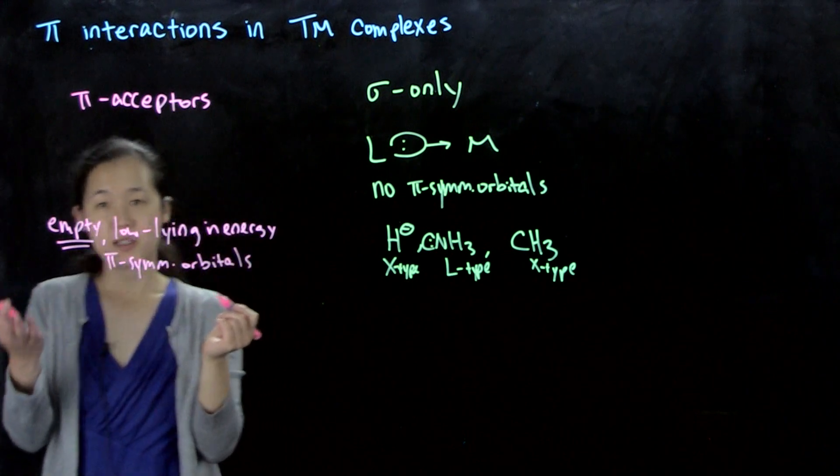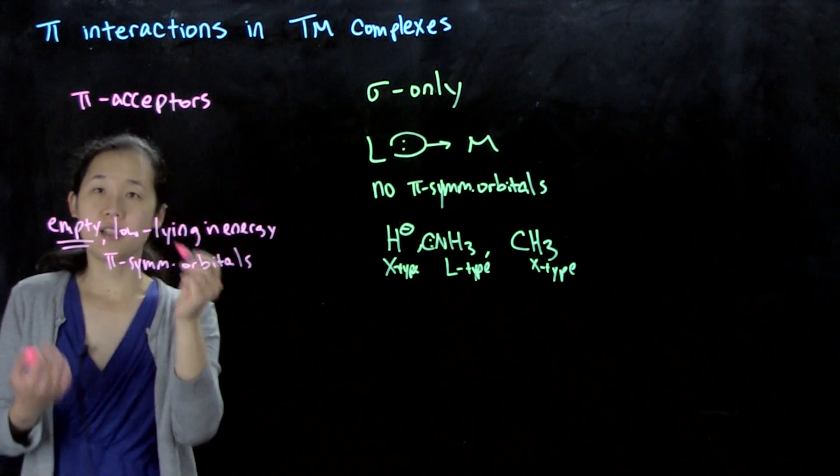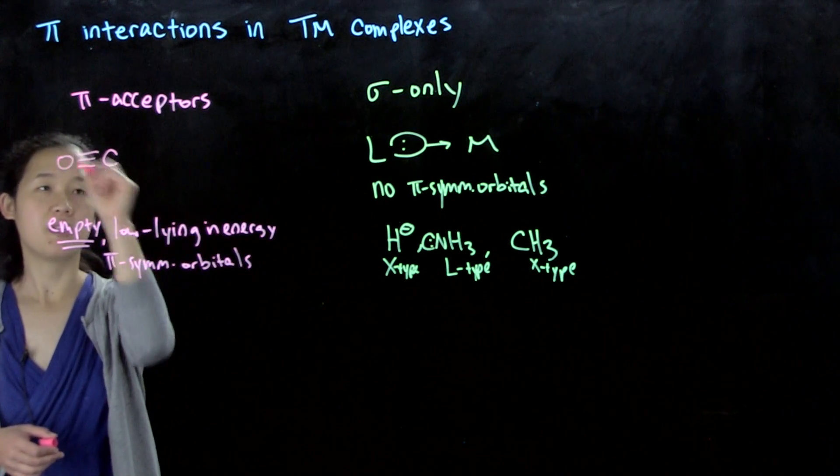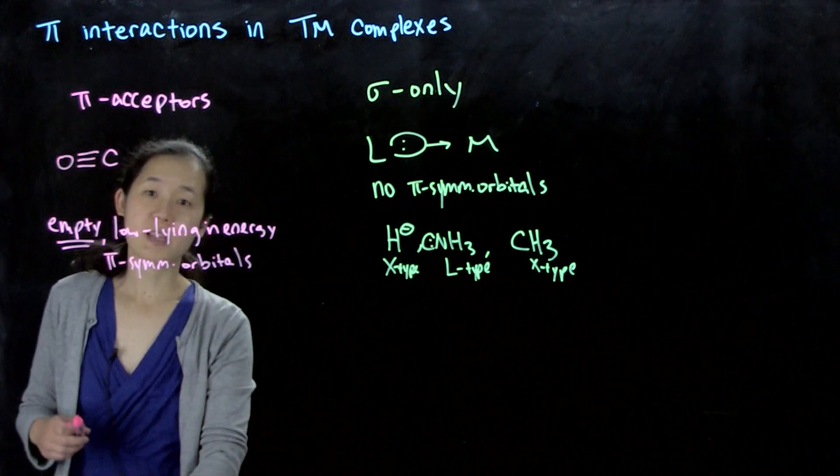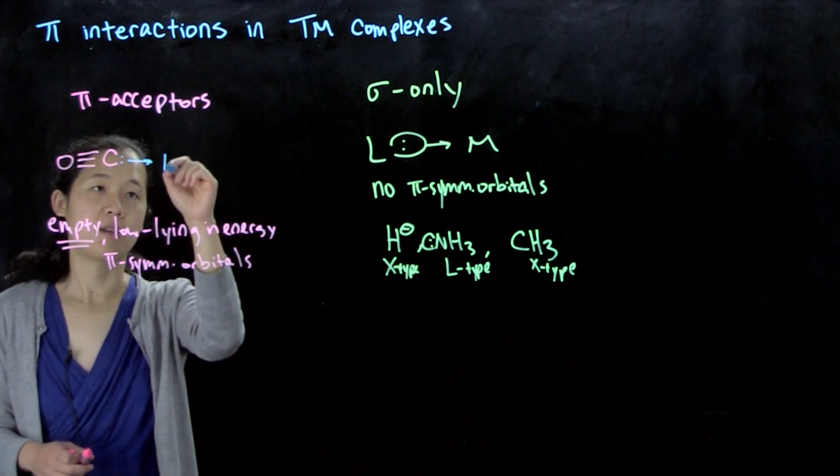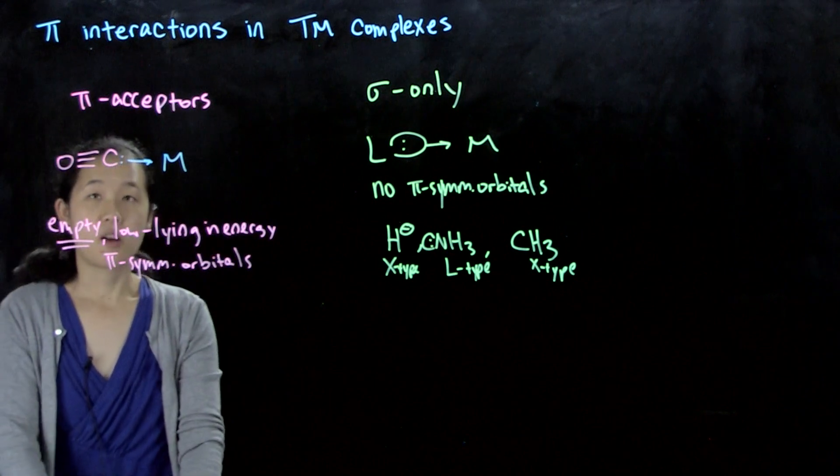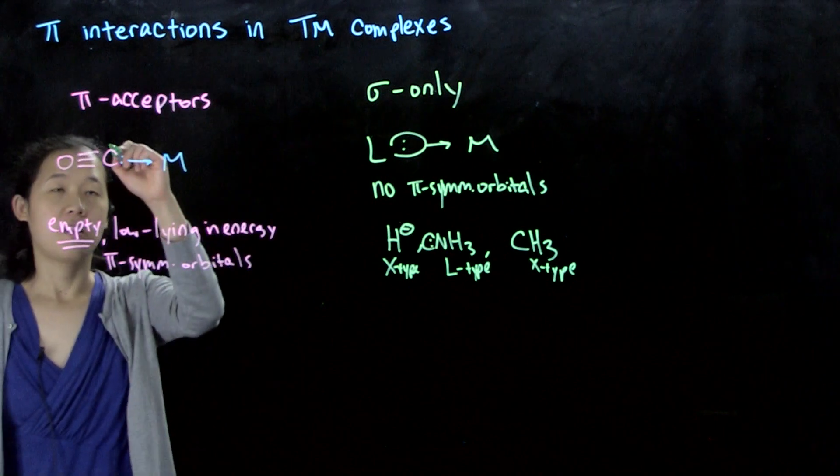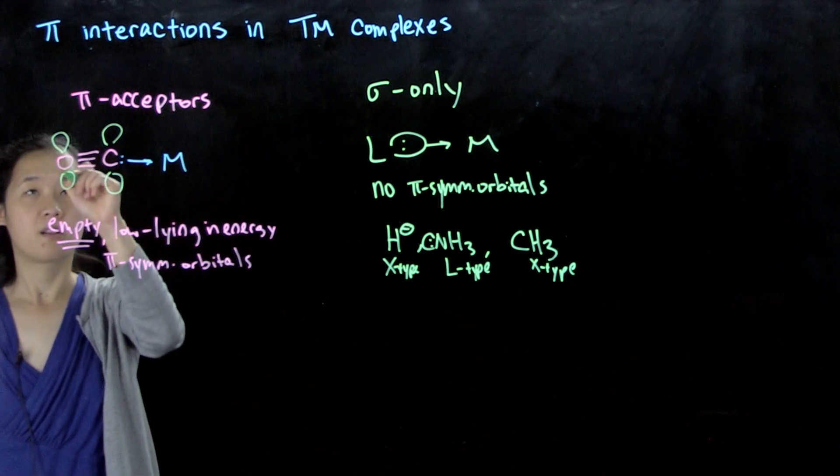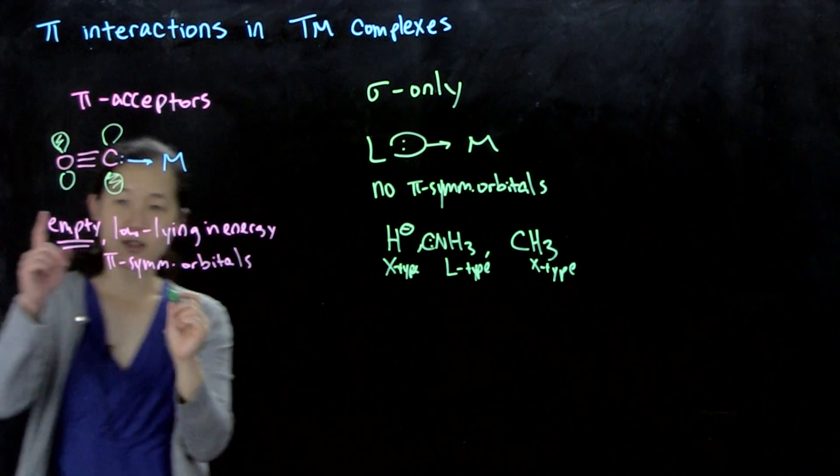One really common example of a pi-acceptor is the carbonyl ligand. The carbonyl ligand has a CO triple bond. The carbonyl ligand does have a sigma interaction, so there's a sigma donation into the metal. But the carbonyl ligand also has pi-star orbitals. Here's the pi-star, the CO pi-star.